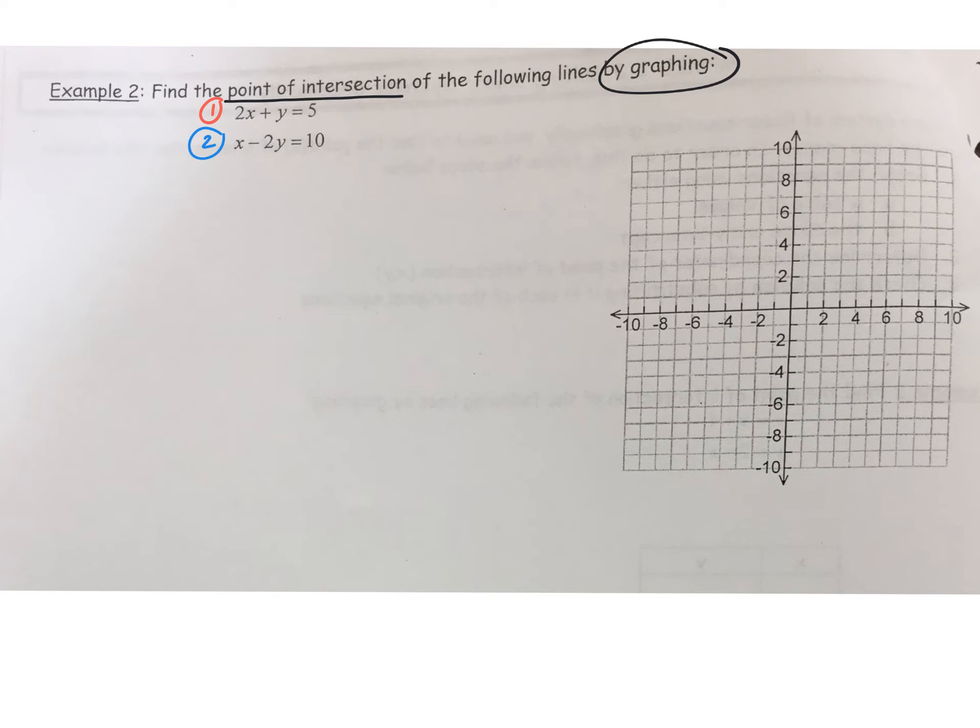In order to graph these, we need to put them into slope-intercept form. Do you guys remember that? What's slope-intercept form? y equals... and how will that help us graph? What does m tell us? Yep, m tells us the slope, so the rise over run, and b tells us the y-intercept.